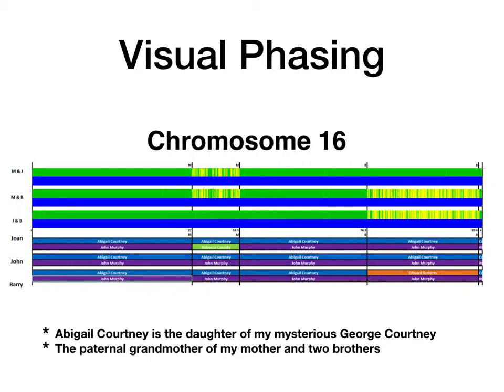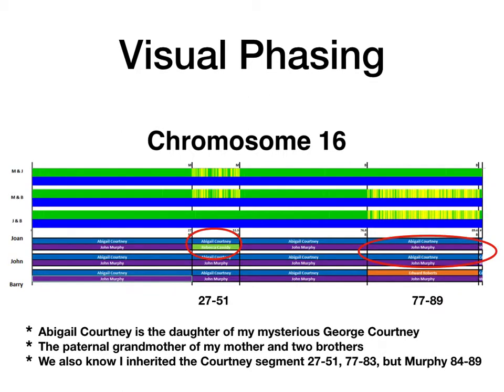I've been lucky enough to use visual phasing to help me track segments on my maternal side. My mother and her two siblings have all tested. Abigail Courtney is the daughter of my mysterious George Courtney and the paternal grandmother of my mother and her two brothers. You can see that they have inherited from her a lot of segments on chromosome 16. I'm going to look at two segments today where there are some differences — in the area of 27 to 51 and 77 to 89.